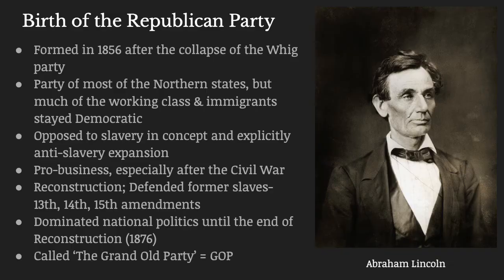We're moving now into the third party system, and technically we still exist in this system in 2020. However, we're also living through a period where party ideologies are shifting again, so it's unclear whether the third party system might be coming to an end. The defining element of the third party system is the birth of the Republican Party, which forms out of the collapse of the Whig Party in the 1850s. It is mainly the party of the northern states, although a lot of working-class people and immigrants in the North did remain loyal to the Democratic Party. The Republican Party was opposed to slavery, at least in concept, and was explicitly against the expansion of slavery into any of the western territories — anything on the western side of the Mississippi River, other than Texas and Missouri.